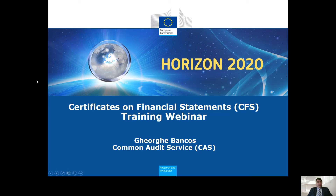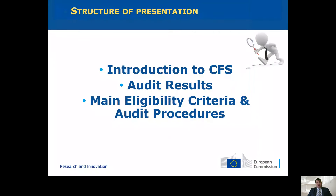So let's see what we will discuss today. The structure of this presentation is the following: first we will explain what the CFS is, then we will look at the most common errors found so far until the beginning of 2021 based on the EC audit results, then we will look at the domain eligibility criteria and the audit procedures — covering procedures applicable for all cost categories, then personal costs, subcontracting, and other direct costs.